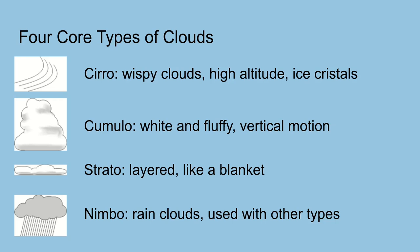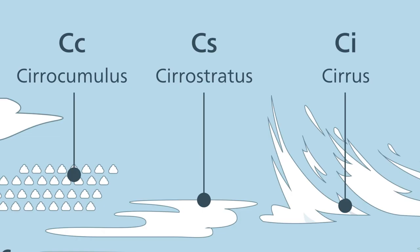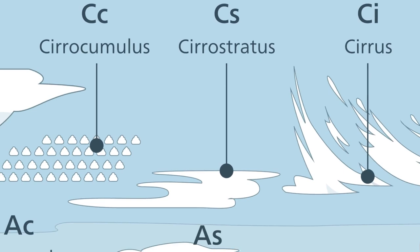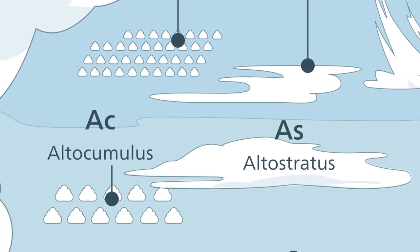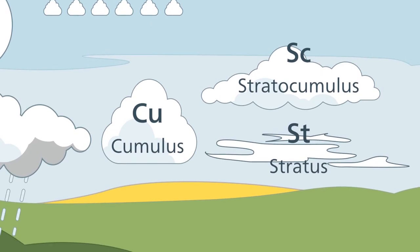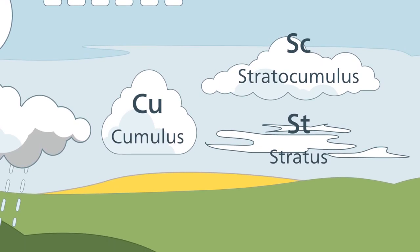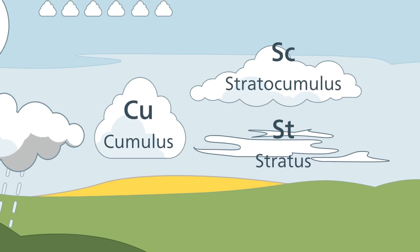These four core types are combined to classify clouds. There is also a prefix alto, meaning high. And it's a bit confusing because this prefix is used for mid-level clouds. Let's have a look at the ten basic clouds. Starting at high altitude, there are three main cirrus-form clouds: cirrocumulus, cirrostratus, and plain cirrus. At mid-level, you can find altocumulus and altostratus. At the lowest level there are cumulus, stratocumulus, and plain stratus.